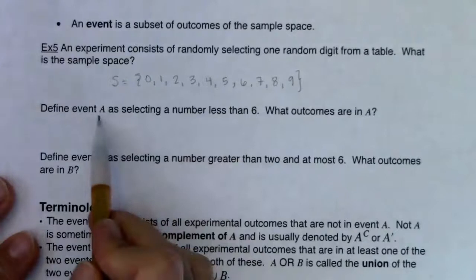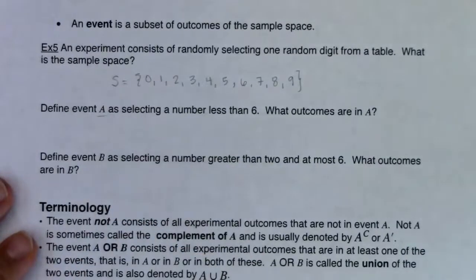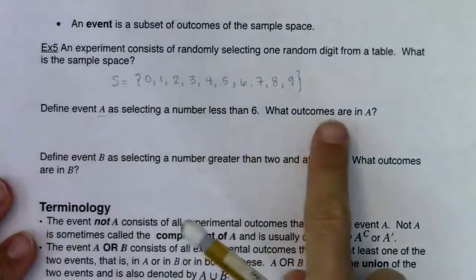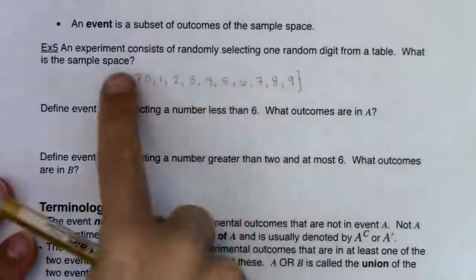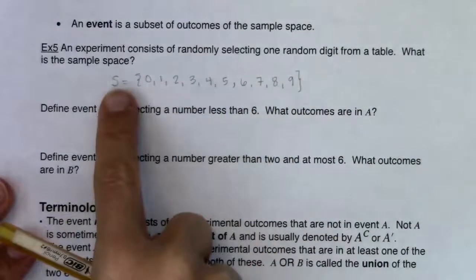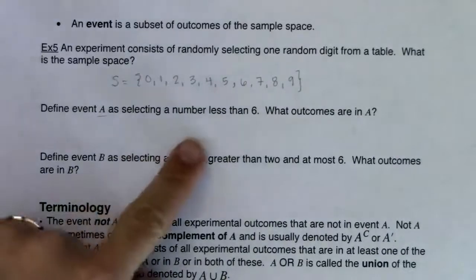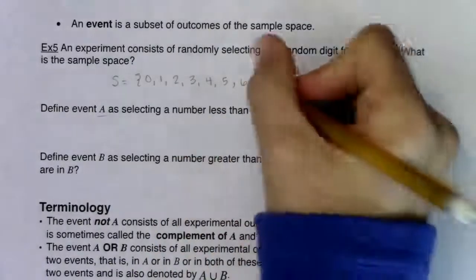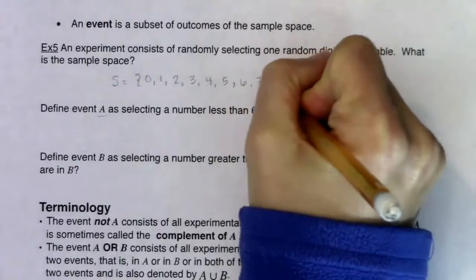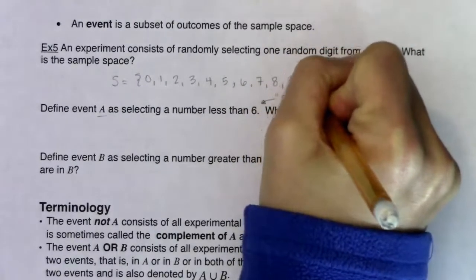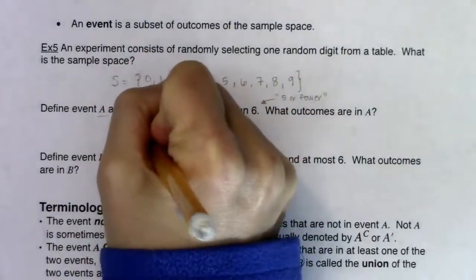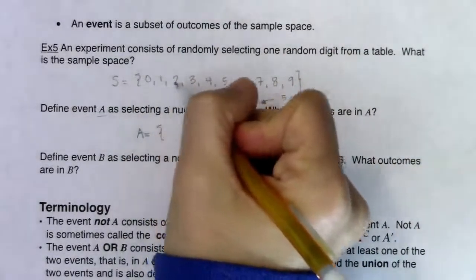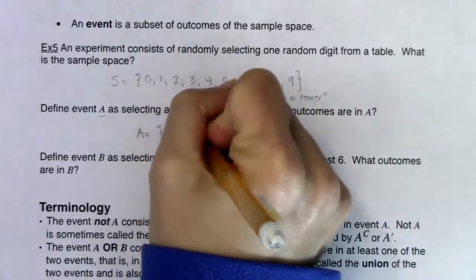Now we're going to pick up a new letter. We define event A as selecting a number less than six. What are the outcomes in A? The outcomes in event A have to come from the sample space list. Less than six is the same as saying five or fewer. So the outcomes in event A are: zero, one, two, three, four, five.